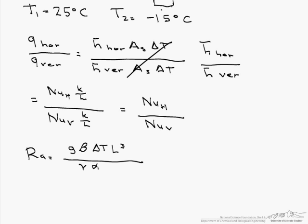So we need to look up some of these properties, and we look them up at a mean temperature of 283 K. Our kinematic viscosity is 13.84 times 10 to the minus 6 meters squared per second. Our alpha is 19.5 times 10 to the minus 6 meters squared per second.